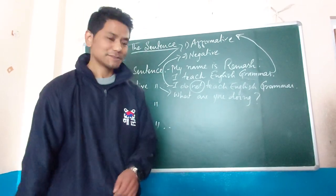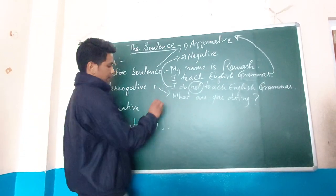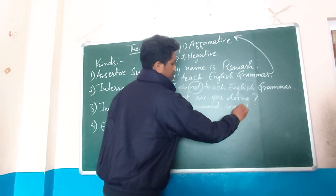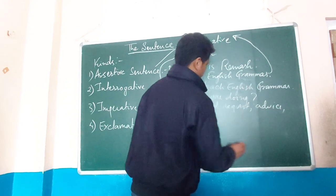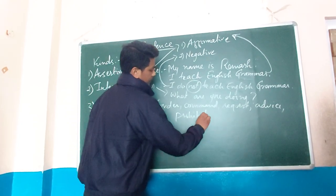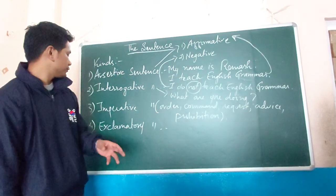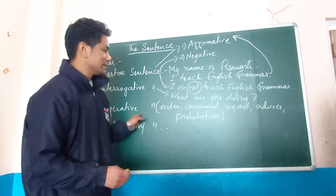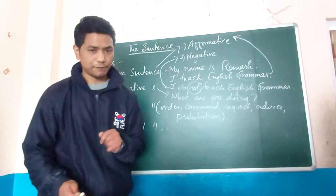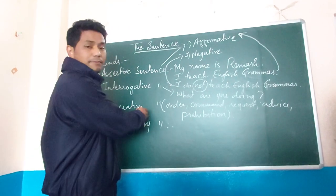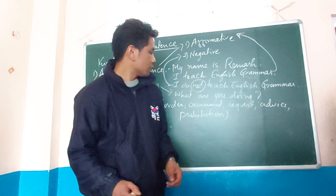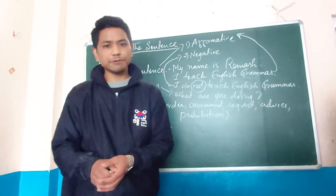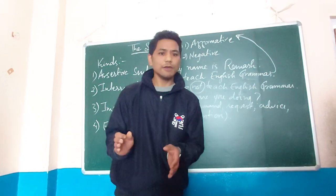In an imperative sentence you have to remember there will be order, command, request, advice, or prohibition. These are the qualities you are going to find in an imperative sentence. They also end with a full stop — don't get confused with assertive sentences. For example: 'Bring me that book' is an imperative sentence with a command. 'Please bring me that book' is a request — still imperative. 'If you don't study, you are going to fail' is advice — imperative. 'Trespassers will be prosecuted' is prohibition — also imperative.